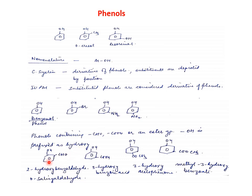For example, if there is an aldehyde functional group, we call it 2-hydroxybenzaldehyde; its commonly accepted name is salicylaldehyde. Since both are at the ortho position, we call it ortho-salicylaldehyde. Similarly, 3-hydroxybenzoic acid is a derivative of benzoic acid. 3-hydroxyacetophenone: since a –COCH₃ group is on the benzene ring, it is acetophenone, and numbering starts accordingly. If there is an ester group, we get methyl 3-hydroxybenzoate, i.e., treated as a derivative of benzoate.